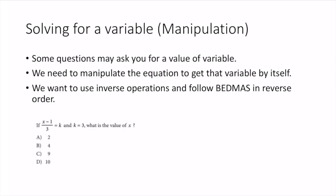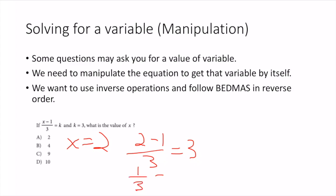Say I had no idea where to start. If you have time, take the answers and plug them in. Answer A is x = 2. Plugging in: (2 - 1) / 3 = 3 becomes 1/3 = 3, which is not true. So A cannot be the right answer.